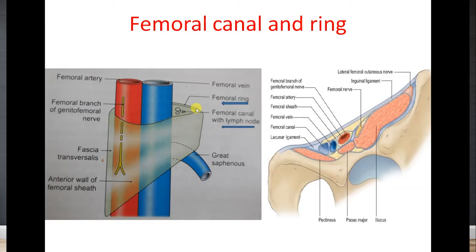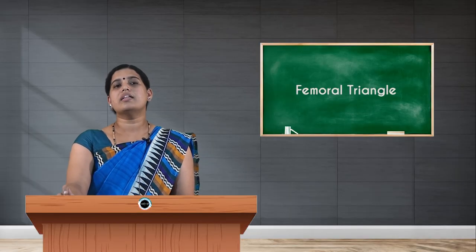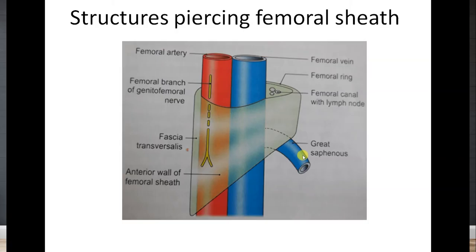The applied importance of the femoral ring is that herniation takes place through this medial-most compartment — the femoral canal. Femoral hernia is the abnormal protrusion of abdominal contents into the upper region of the thigh through the femoral canal.